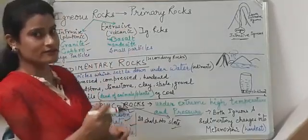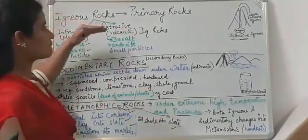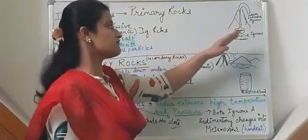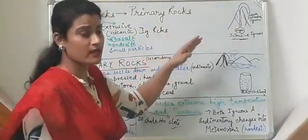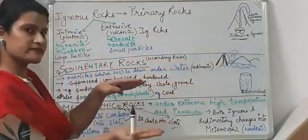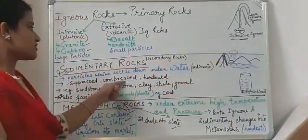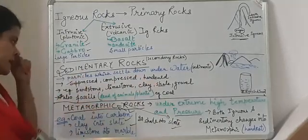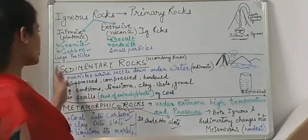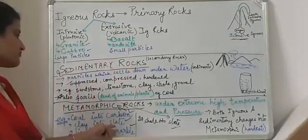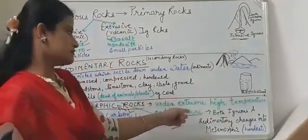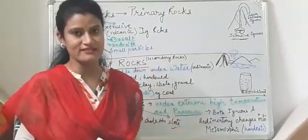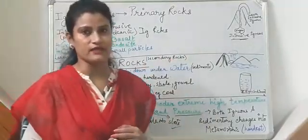So we've covered the entire rock cycle: igneous rocks are formed first from volcanic eruption — both extrusive and intrusive. Through weathering they flow with rivers and settle at the river base to form sedimentary rocks through compression. Sedimentary rocks under extreme heat and pressure form metamorphic rocks. In the next video I will draw the diagram of the rock cycle, which will make everything very clear, and the chapter will end with that cycle.